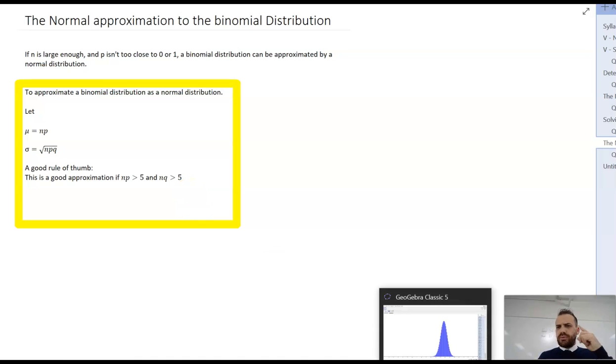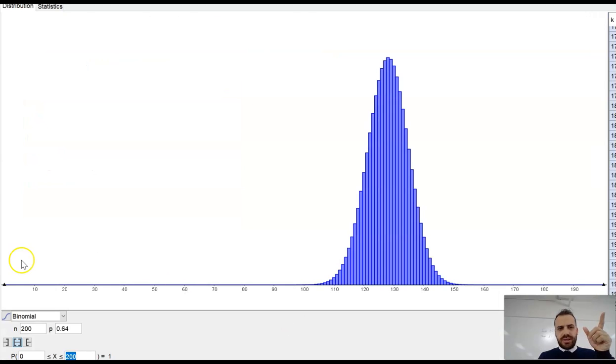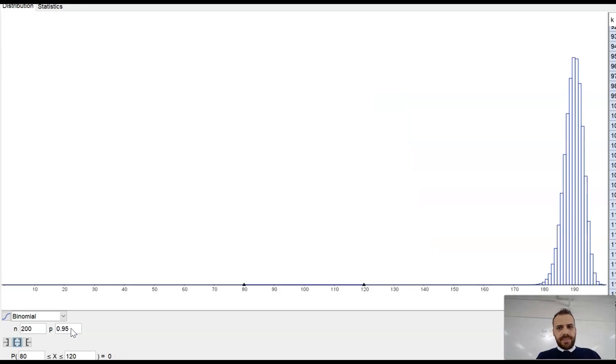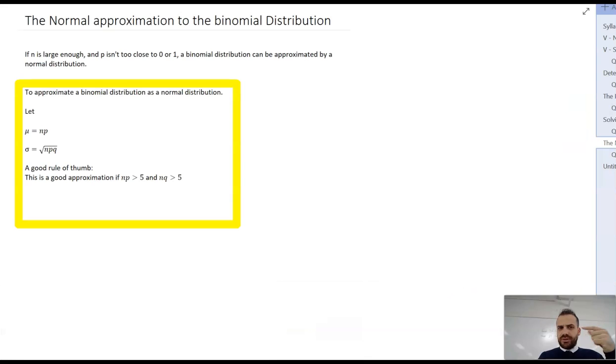Now, that makes me think, what about that example that I said isn't a good example? Well, let's see. I said, what if the probability was like 0.95? Then that might not be a good example. That might not be a good use of this. Well, maybe I'm wrong. So let's take a look.